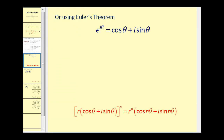Another way to look at this theorem is to use Euler's theorem, which states e to the power of i theta equals cosine theta plus i sine theta. It follows that r times e to the i theta equals r times cosine theta plus i sine theta.